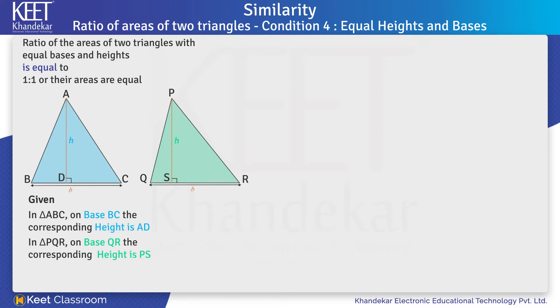Here, bases are equal, therefore BC equals QR. And the heights are also equal, AD equals PS. The second part of the statement is: The ratio of areas of two triangles is 1 as to 1, or the areas are equal.